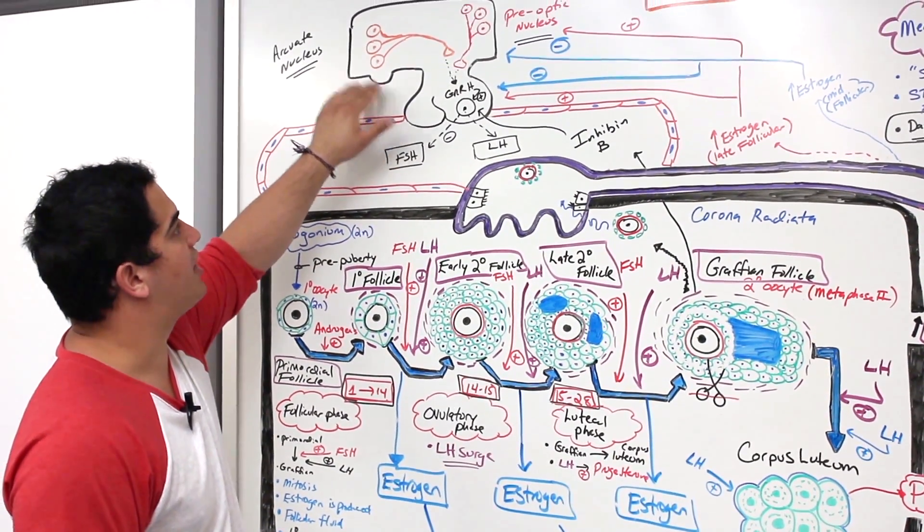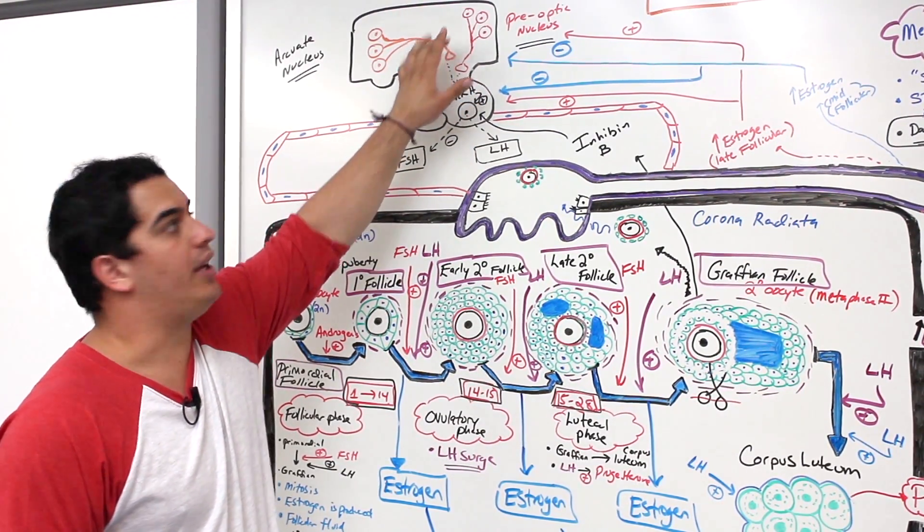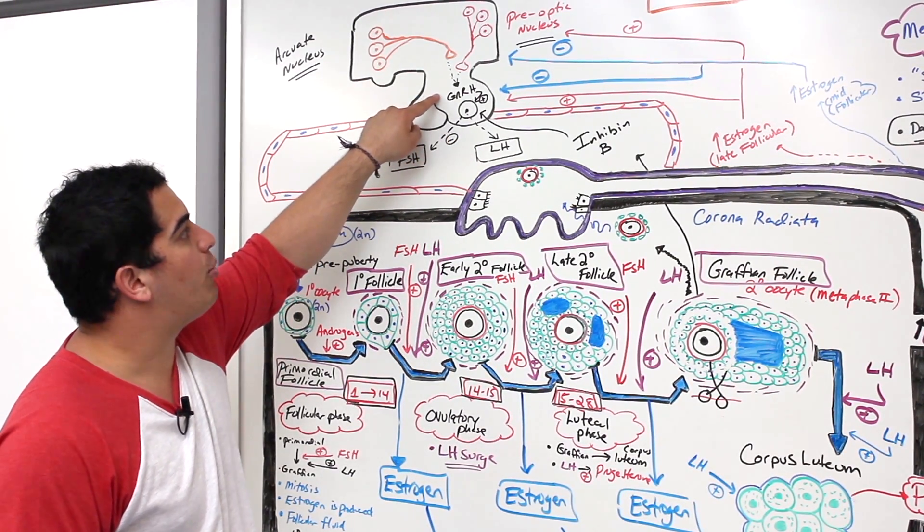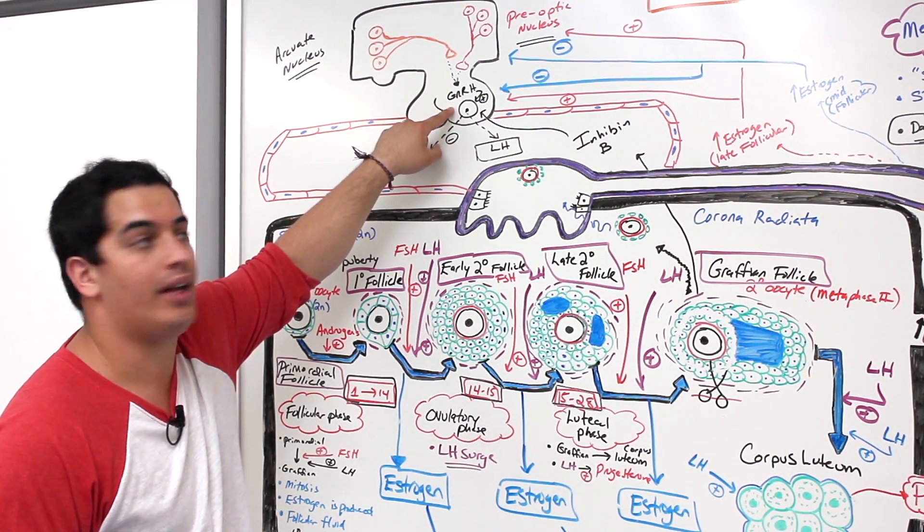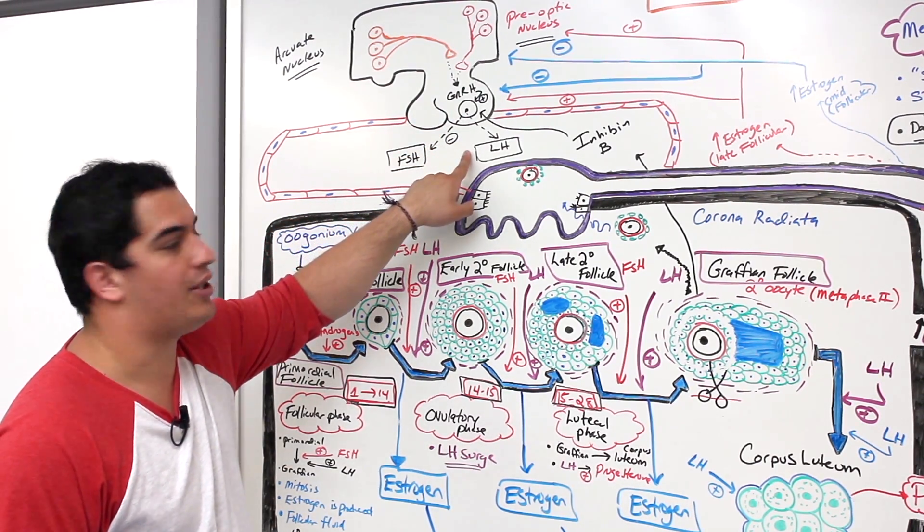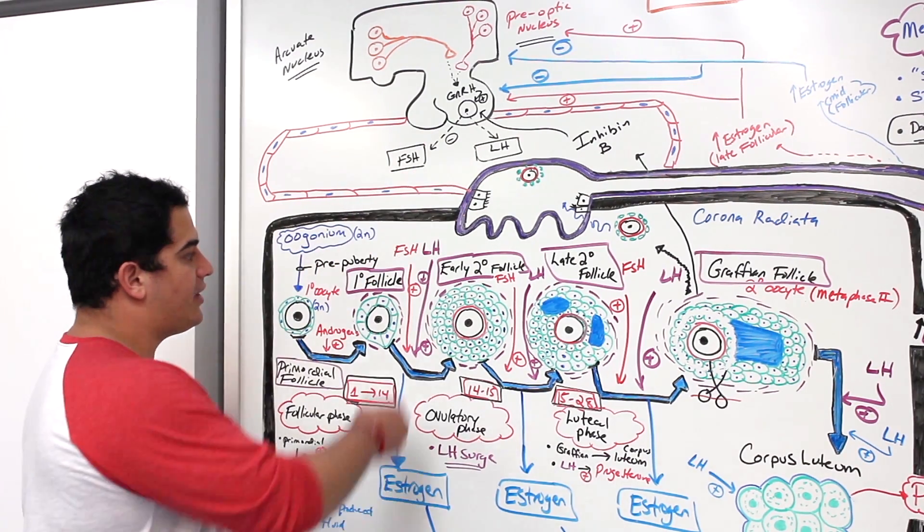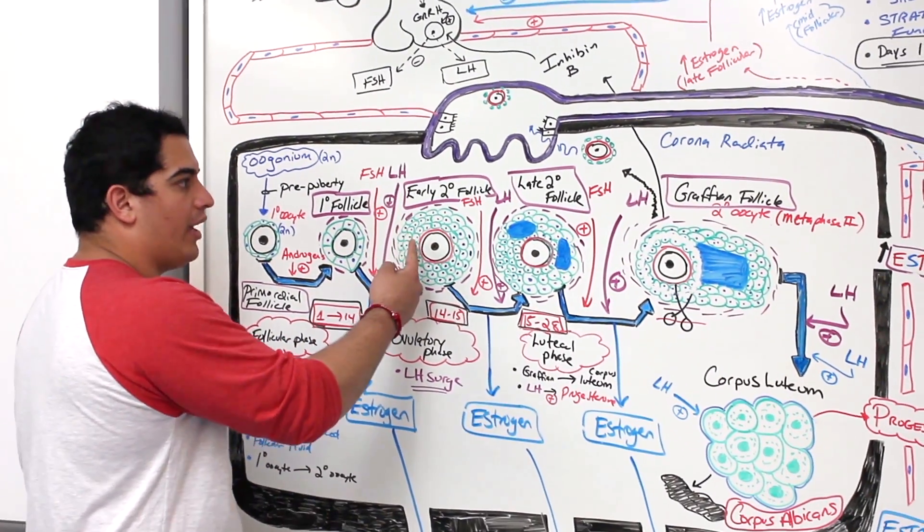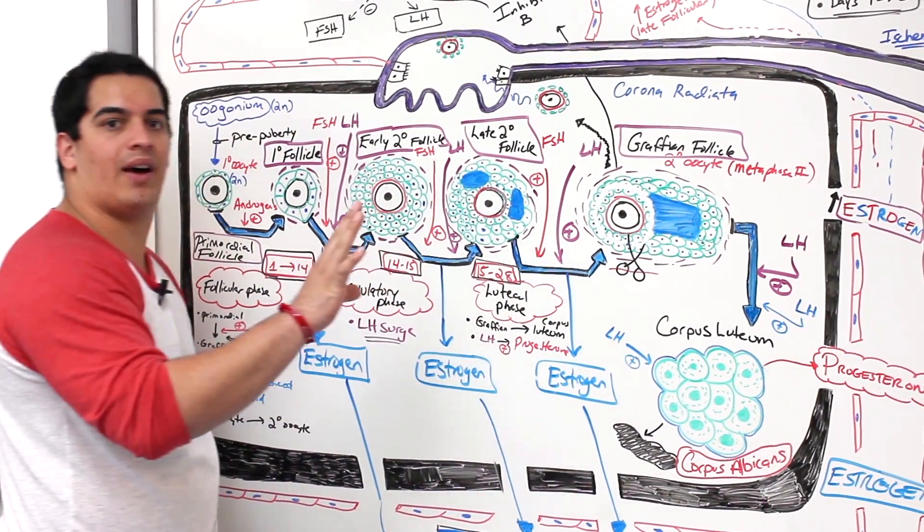In the hypothalamus there was the arcuate nucleus and the pre-optic nucleus. Once you hit puberty they start releasing gonadotropin releasing hormone. This GnRH stimulates the anterior pituitary gonadotropes to release FSH and LH. FSH is going to stimulate the conversion of a primary follicle into an early secondary, an early secondary into a late secondary, and then a late secondary into a graafian follicle.